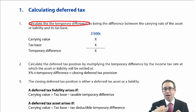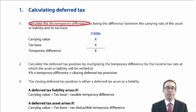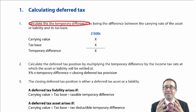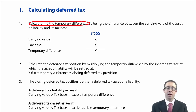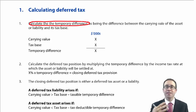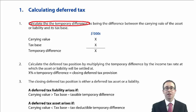You take your cost less accumulated depreciation to give you the carrying value of your property, plant and equipment, then compare that to the tax base. Under tax rules for PPE, you take your cost less accumulated tax depreciation or accumulated capital allowances. The difference between the two gives you your temporary difference.